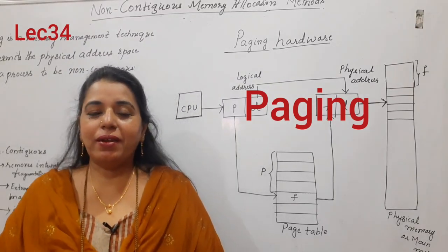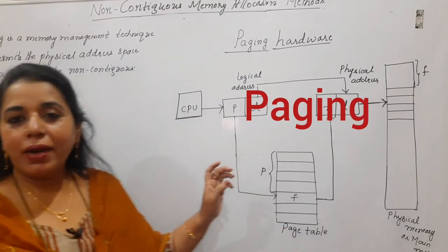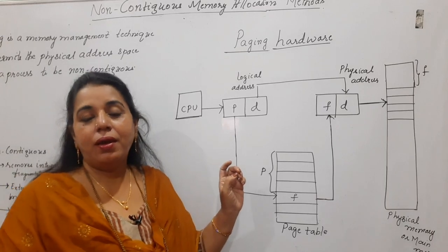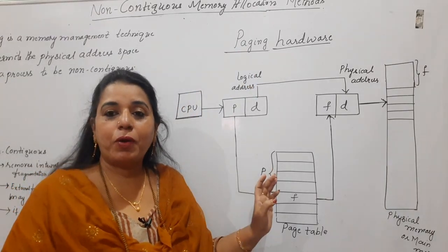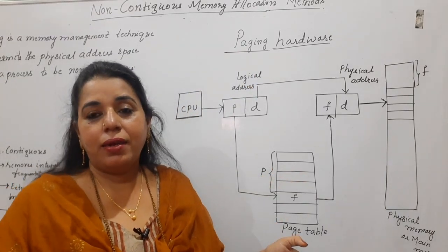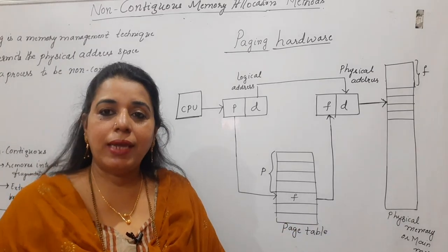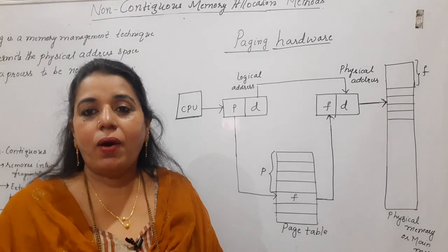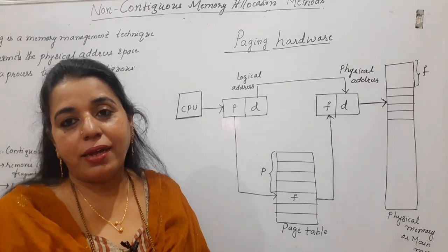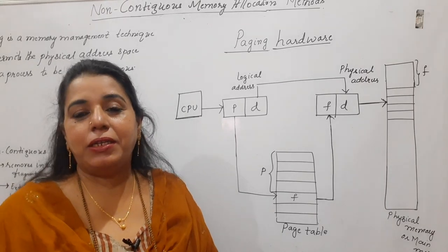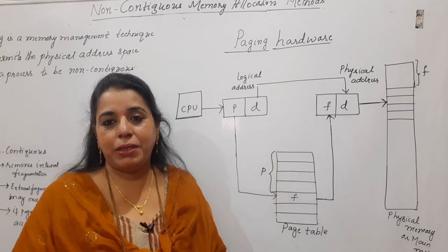Hello viewers, welcome back to my channel. In this session, I shall be discussing the non-contiguous method of memory allocation called paging. In the very introduction for this module, I told you that there is one main category called contiguous memory allocation and the other one is non-contiguous. In non-contiguous, you have two different types: paging and segmentation. In this session, I shall give you the basic concept of paging.